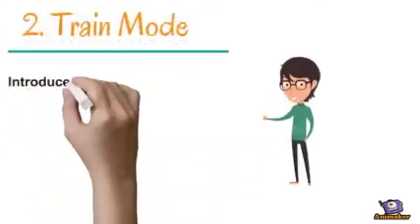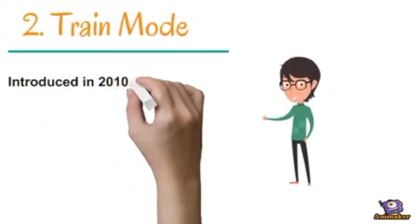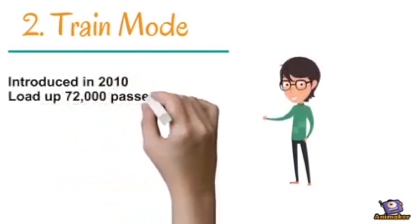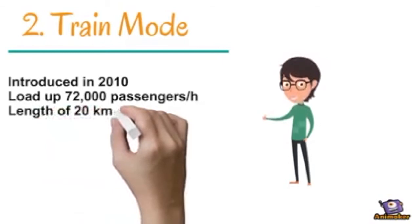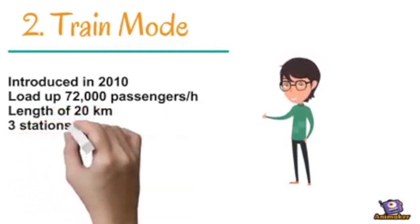Second, train mode. In 2010, Saudi government introduced the Southern Mashar rail line. The line expected to transport 72,000 passengers per hour with full capacity. This line length is 20 kilometers with three stations.